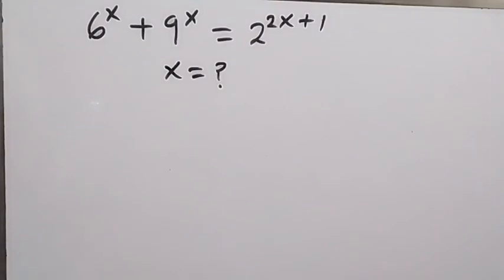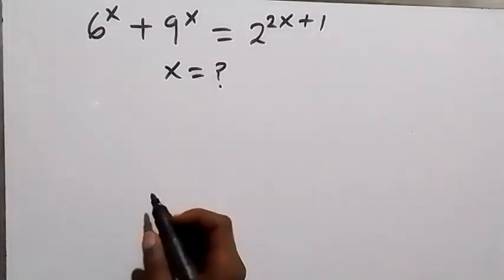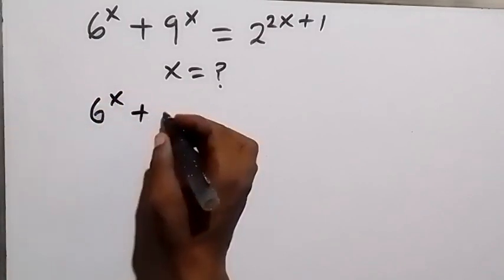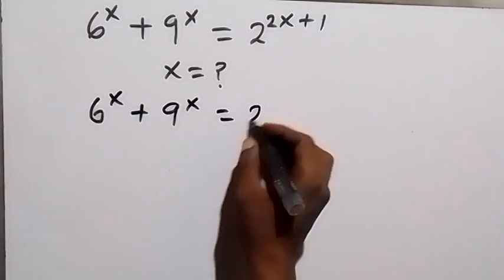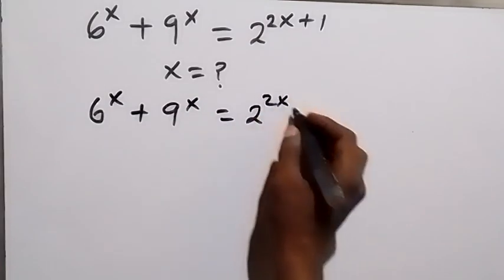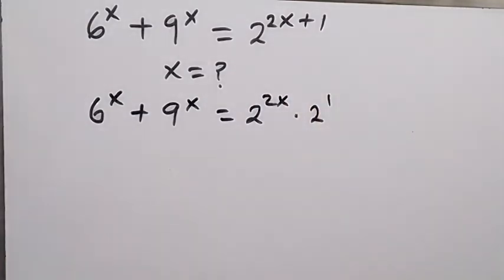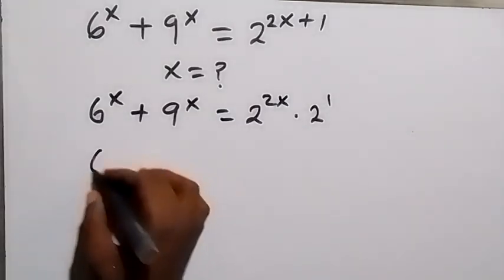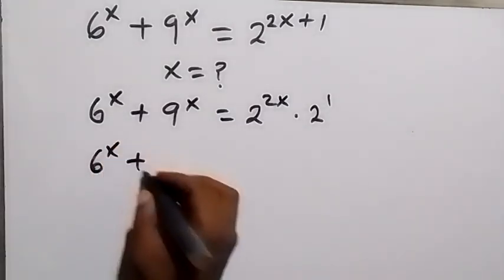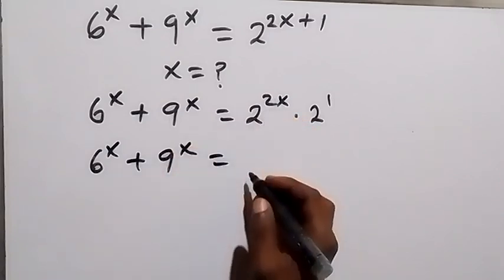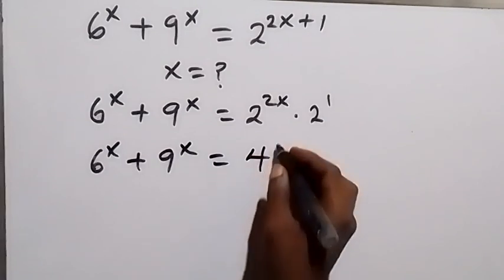Hello, you are welcome. How to find the value of x in this Olympiad problem. From here we can rewrite this — 6 raised to power x plus 9 raised to power x equals 2 raised to power 2x times 2 raised to power 1, when we separate this from the law of indices. In the next step, this becomes 6 raised to power x plus 9 raised to power x equals 2 raised to power 2, that's 4, then 4 raised to power x.